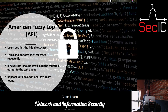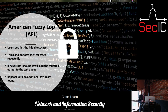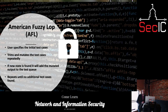The user can specify the initial test case — instead of just executing it, you can provide specific invalid data as a starting point. For example, if you have an XML parser, you can feed it malformed XML data to see how it responds. As the test runs on, AFL trims and mutates the test repeatedly to put additional stress on that binary. If a new state is found, it adds that mutated output to the test queue to conduct further testing, repeating until there are no additional test cases found.